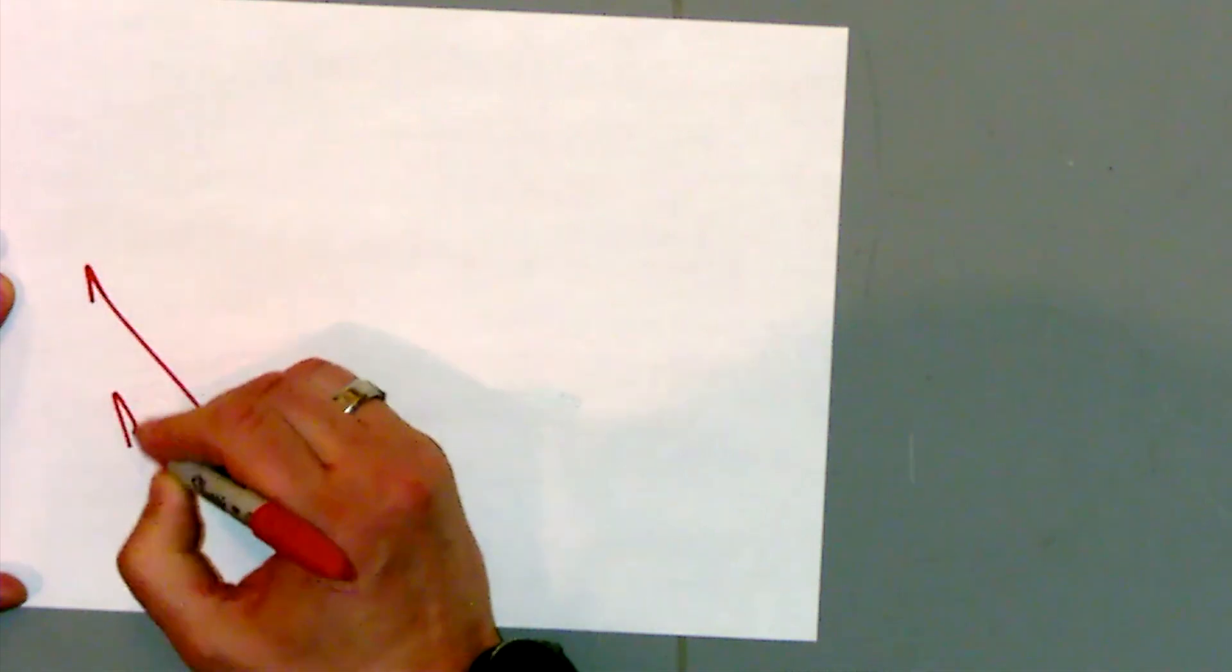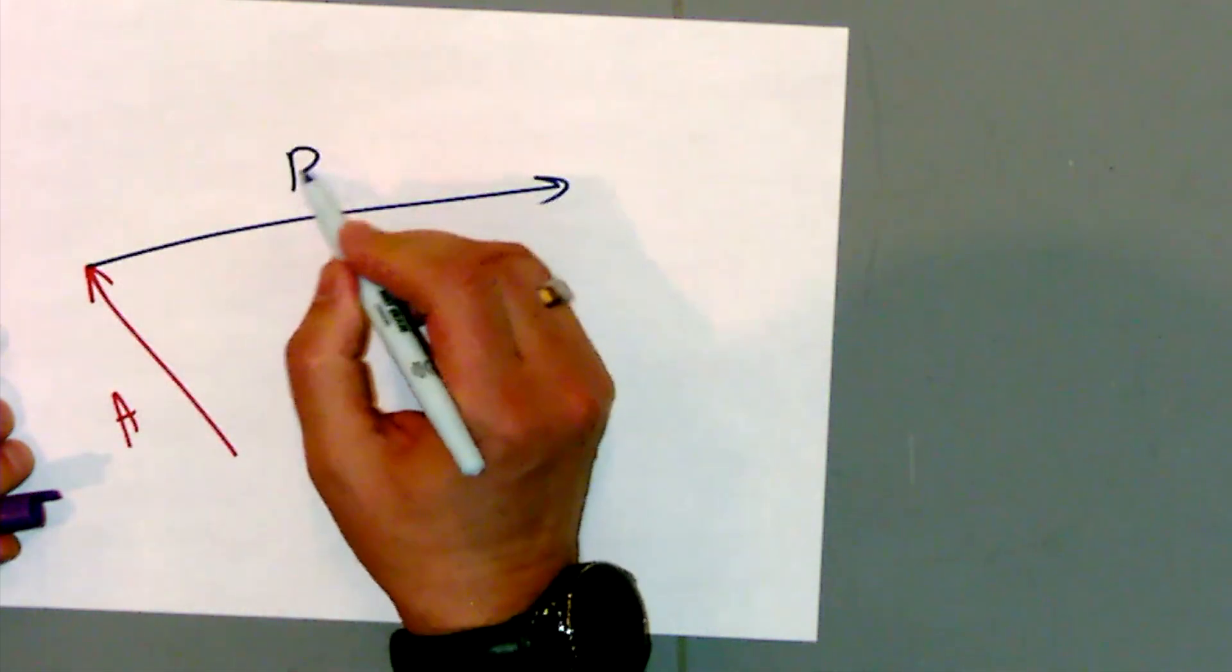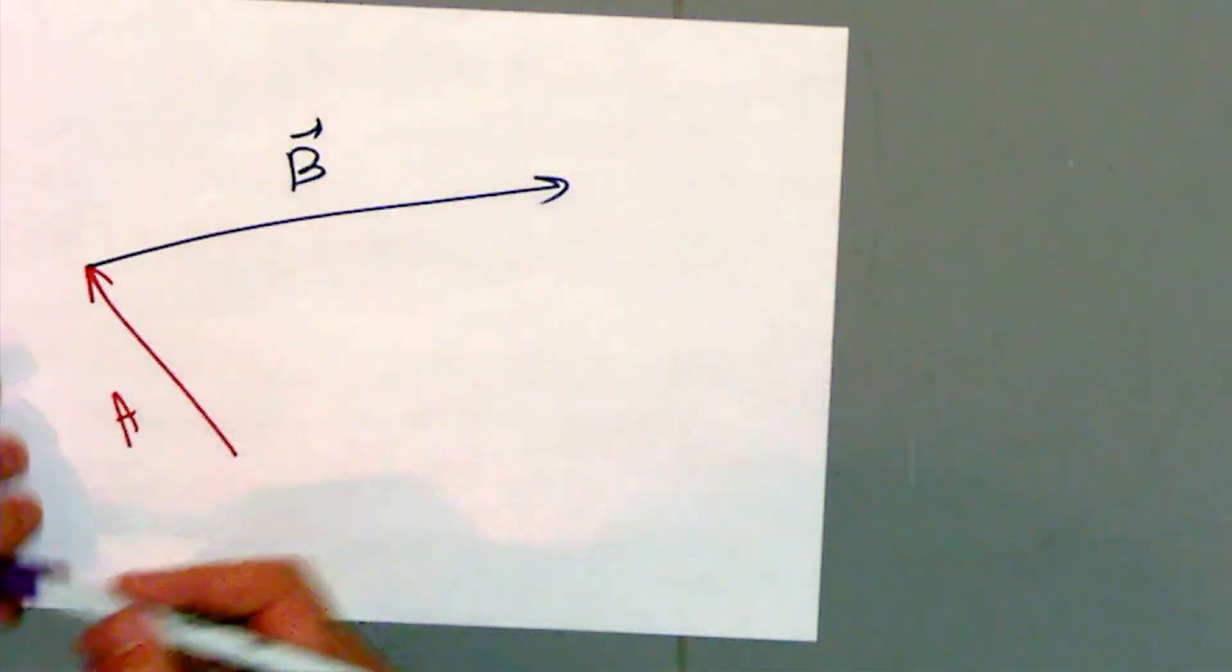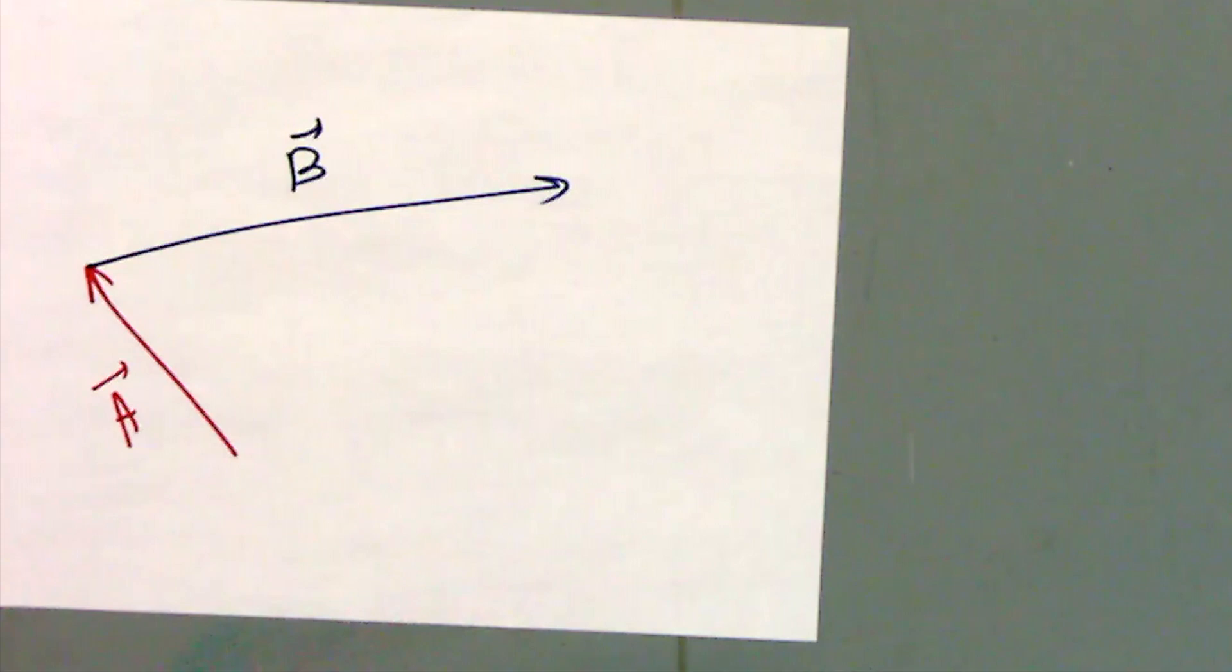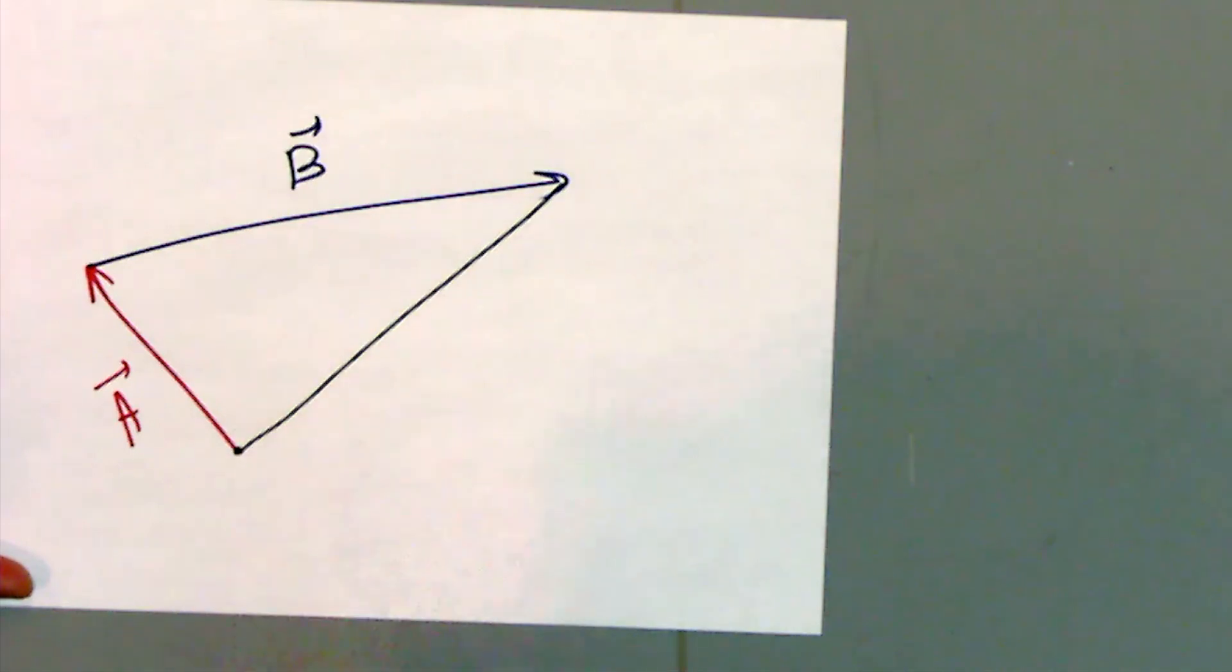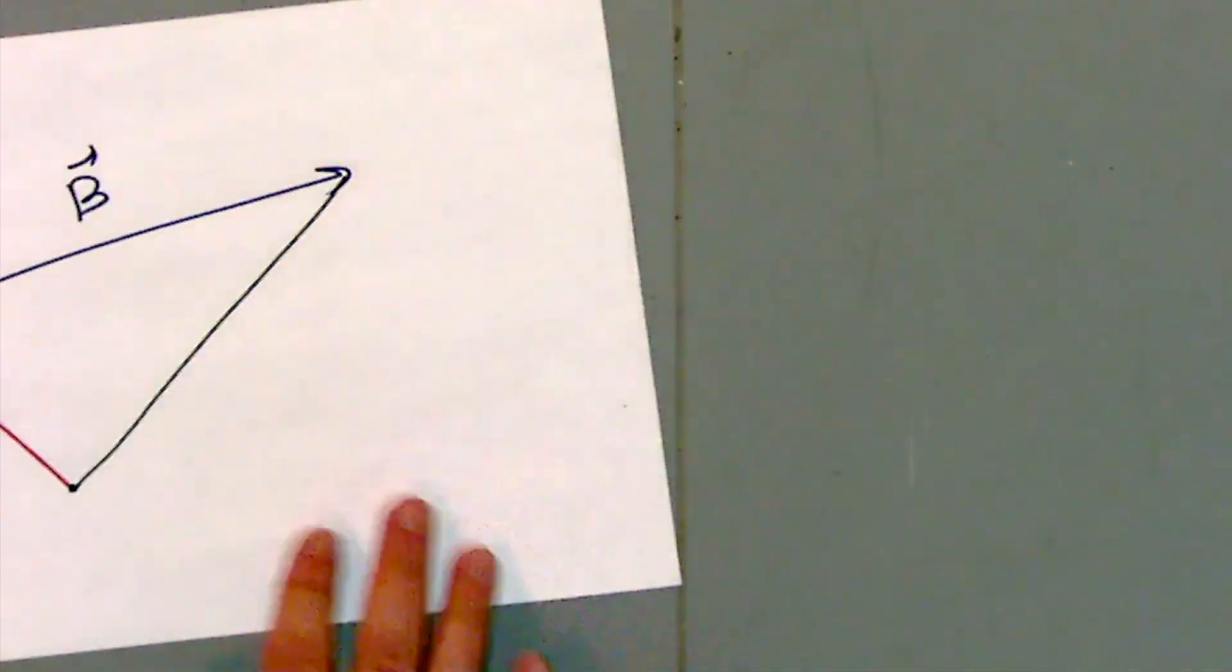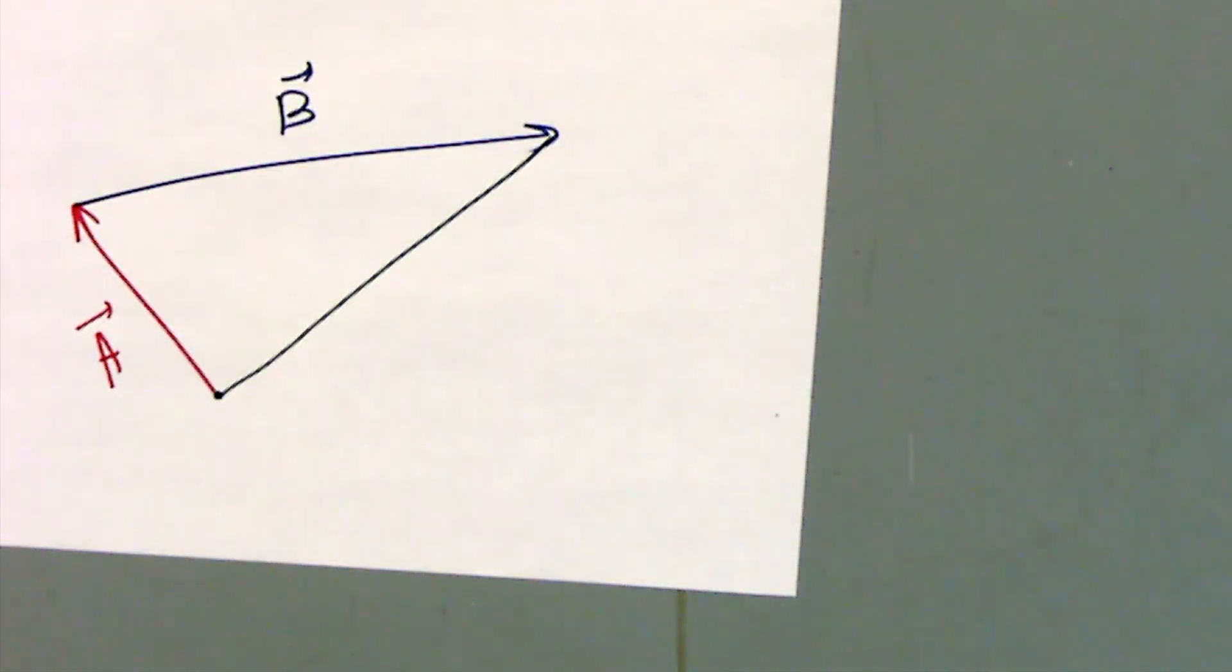If this is vector A and this is vector B, already tailed to a head, if we connect, we can always imagine a tiny ant walking. So we can always treat any vector as a displacement in our mind.